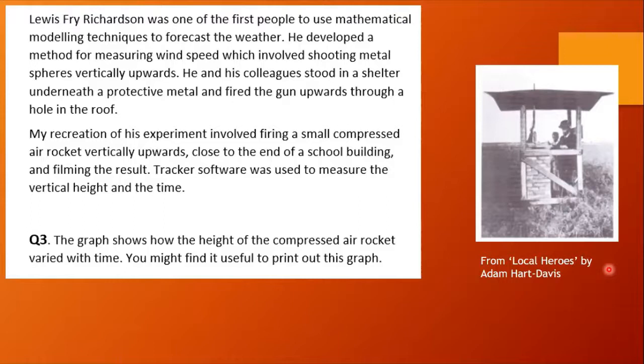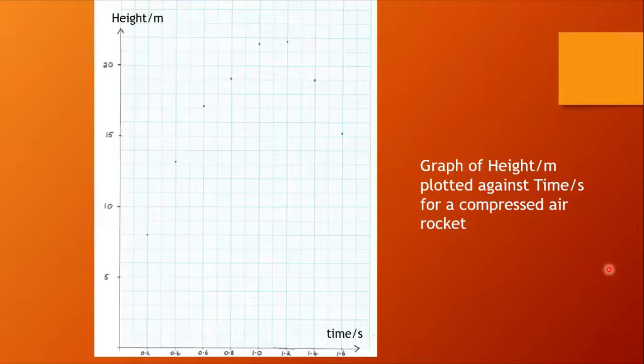I tried to recreate this experiment using a small compressed air rocket fired vertically upwards close to the end of a school building and filming the result. I used Tracker software to measure the vertical height and the time. Even so, I've got to admit that this was a difficult experiment to carry out and involved eventually the estimation of some of these values. The graph coming up shows how the height of the compressed air rocket varied with time. You might find it useful to print out this graph to use it to answer some of the questions.